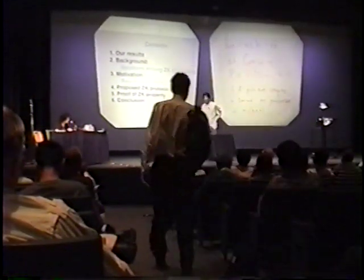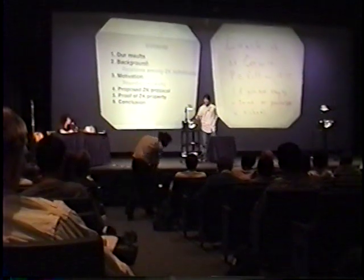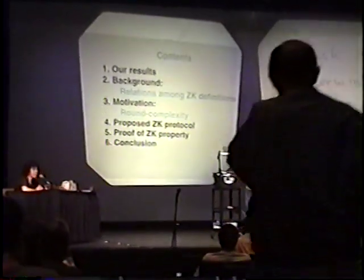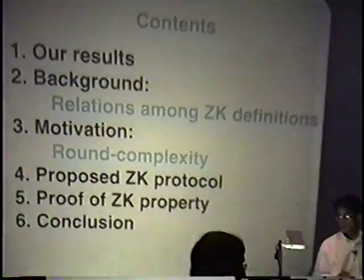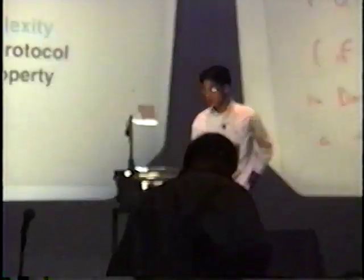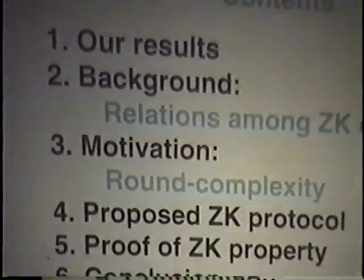First, let me show you our results. Next, I'll give you some background on zero-knowledge. In particular, I clarify relationships among five divisions of zero-knowledge. I will explain our motivation. Our motivation is to investigate around complexity. I propose a three-round zero-knowledge protocol and demonstrate its zero-knowledge protocol. And finally, I conclude.